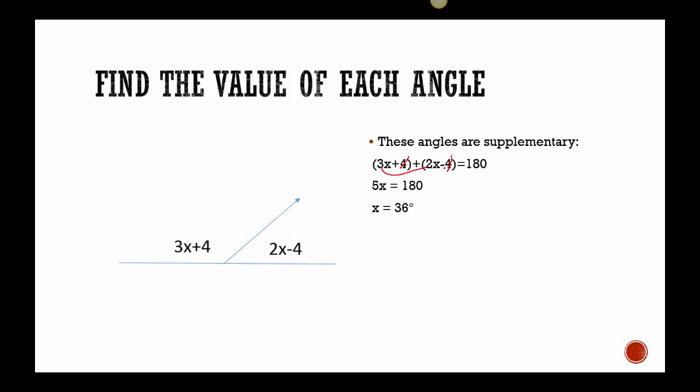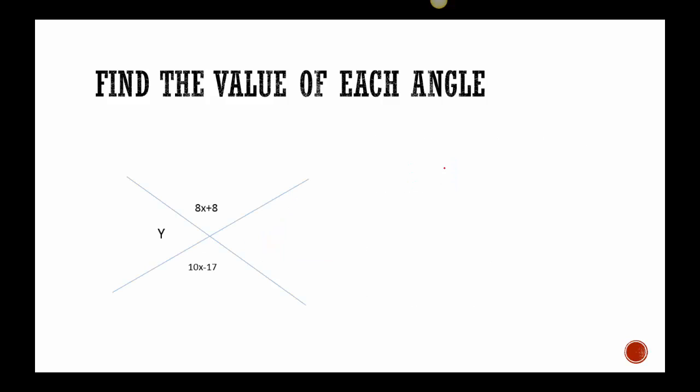After you have the x, we want to plug it back in. So here's what happened when I plugged it into the 3x plus 4. I got 3 times 36 is 108. I added 4 to that, which is 112. I went back and put it into 2x minus 4. So that gave me 2 times 36, which was 72. Minus 4 is 68.